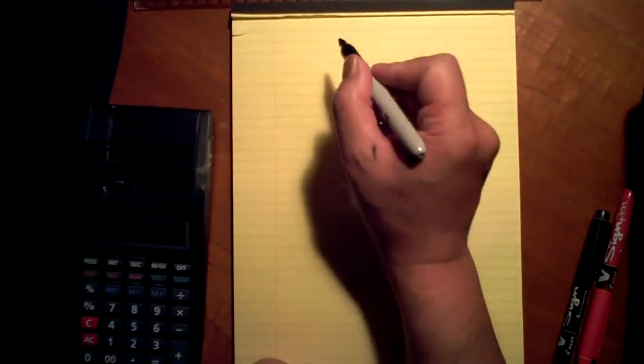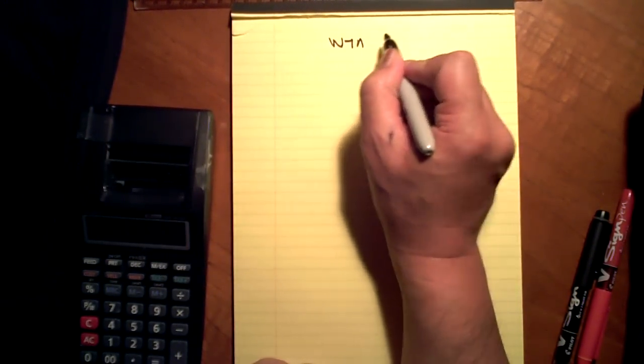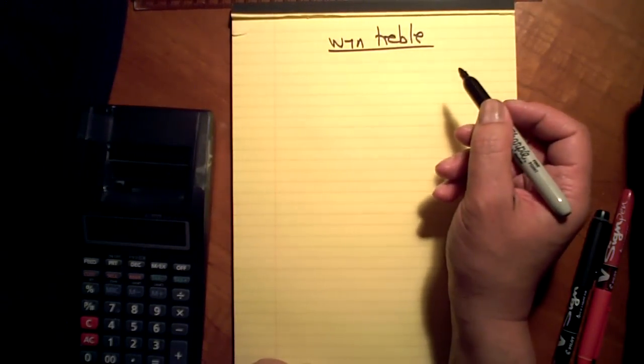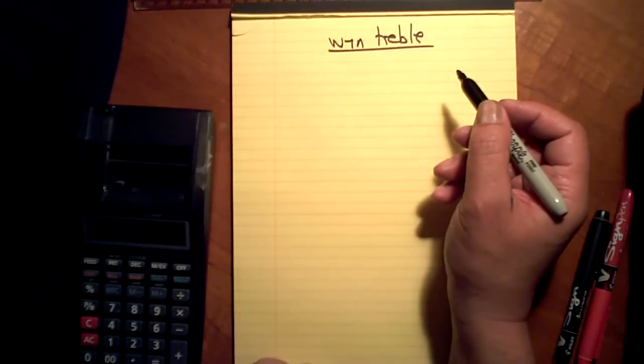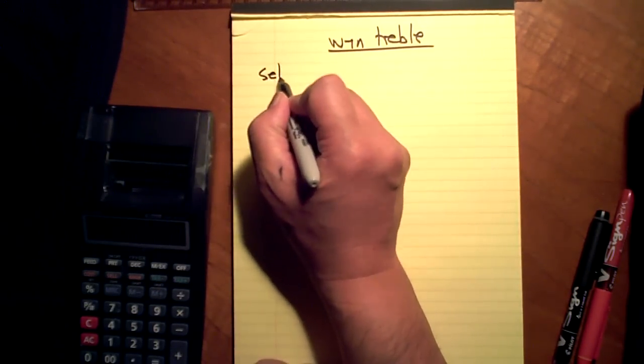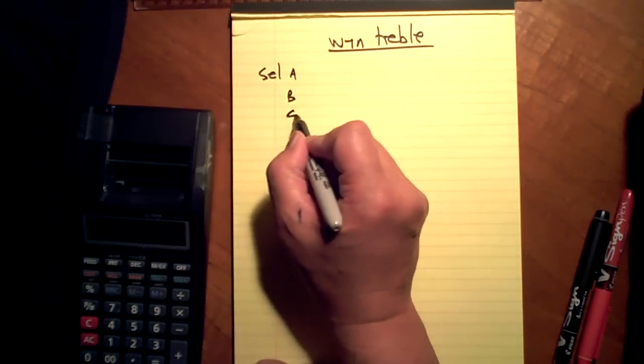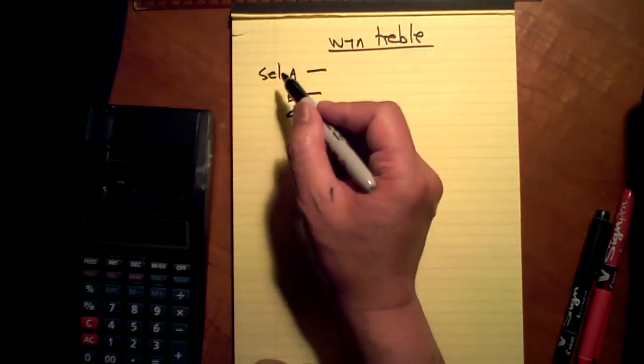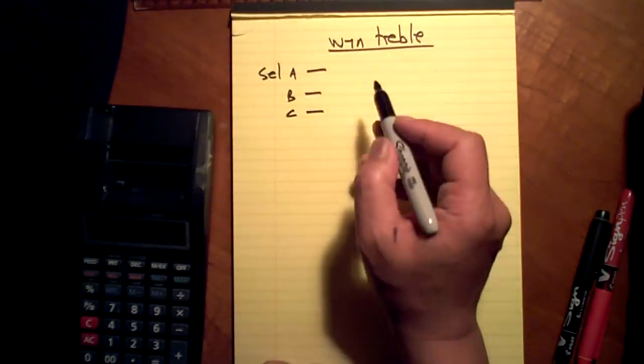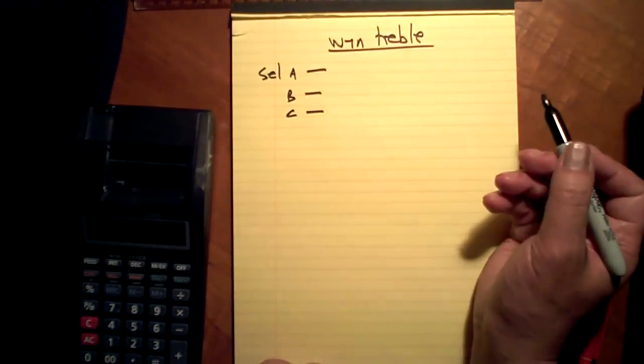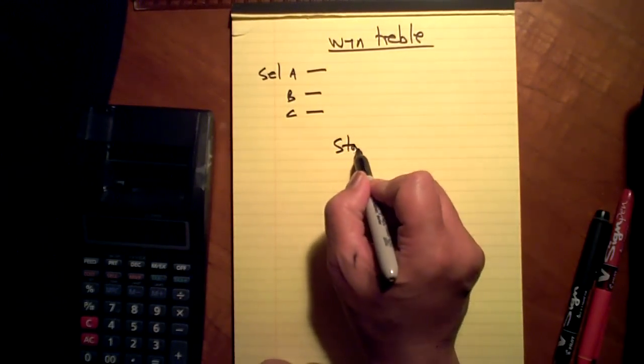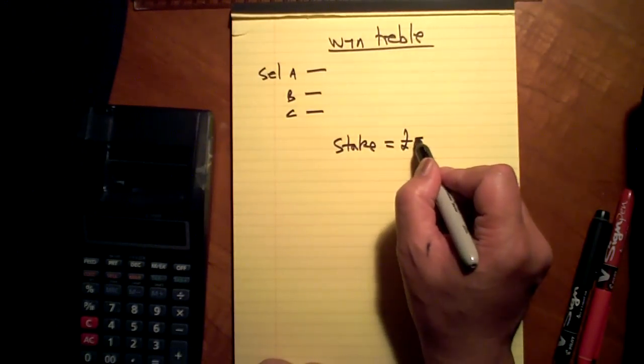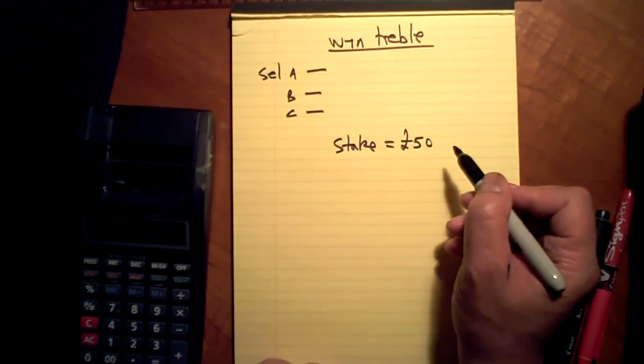Example. Win treble. Like I said, one bet, three selections. Selection A, B, C. All three must win. My stake is £50. That's all I got in my wallet.